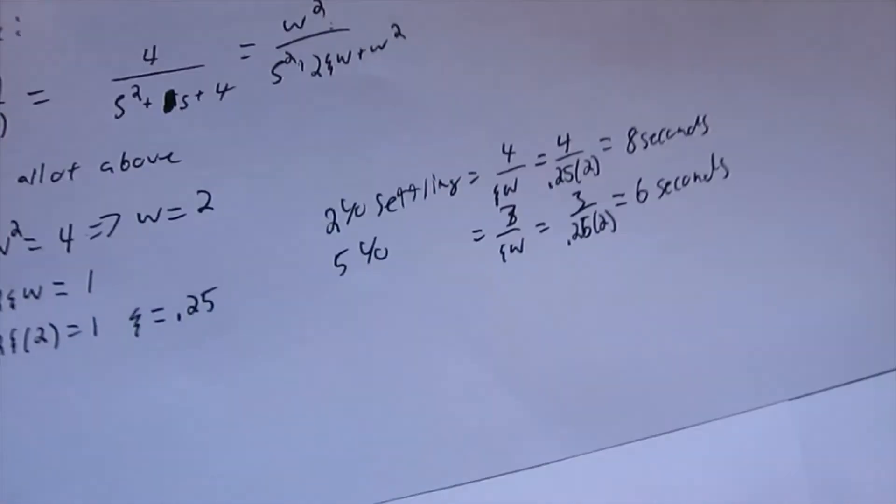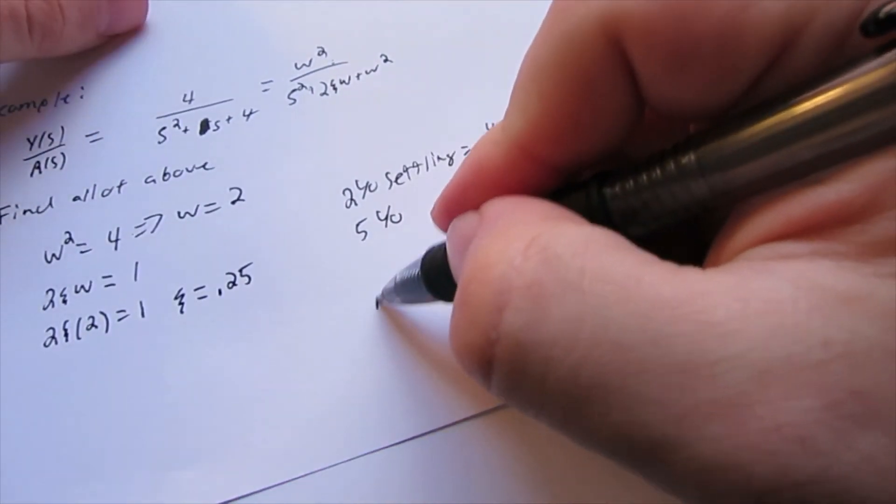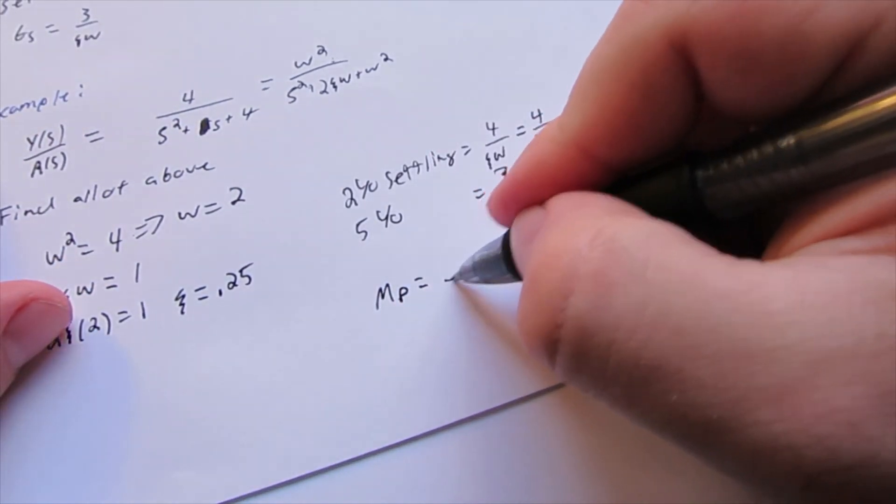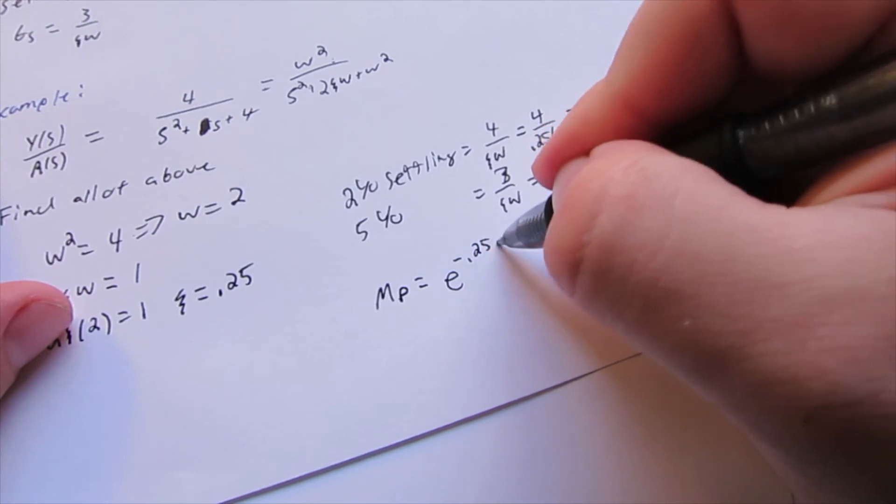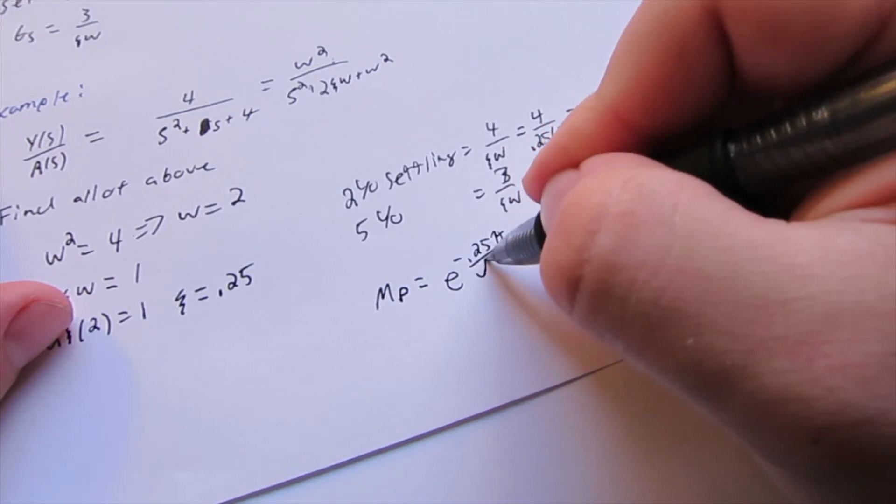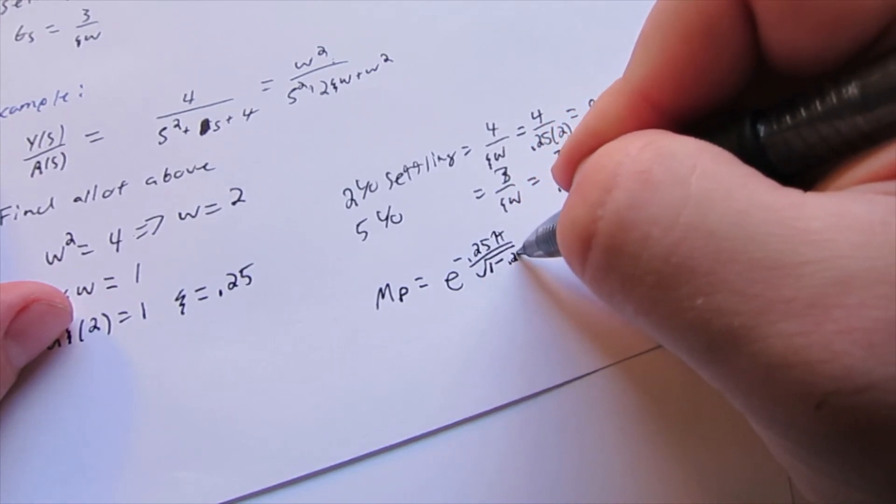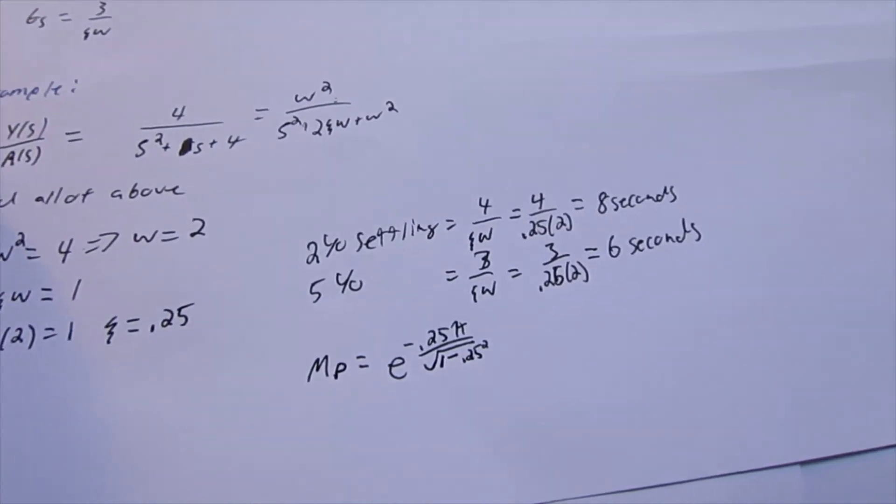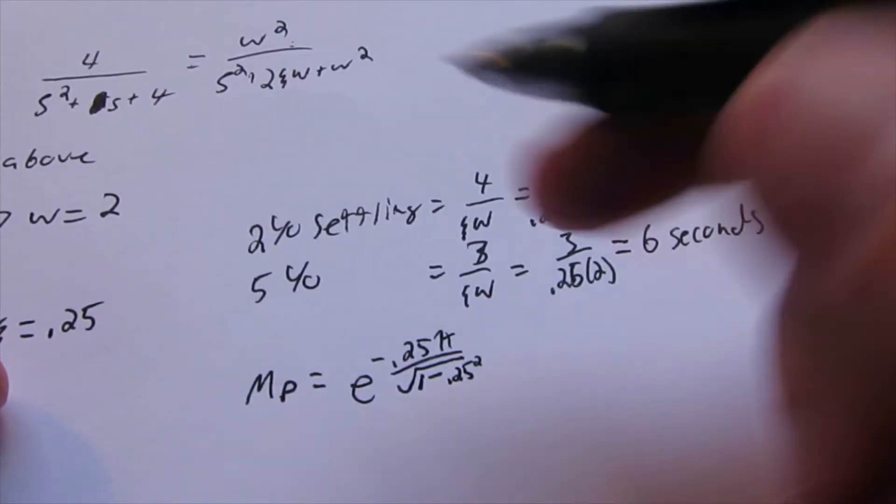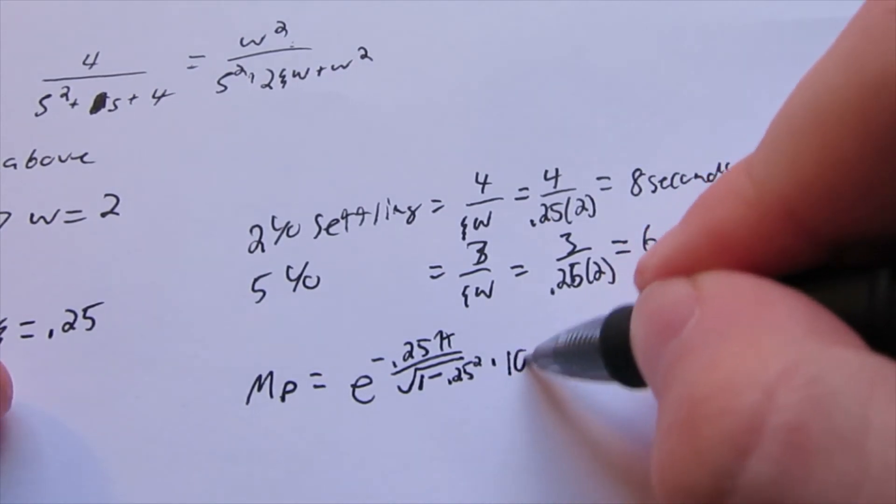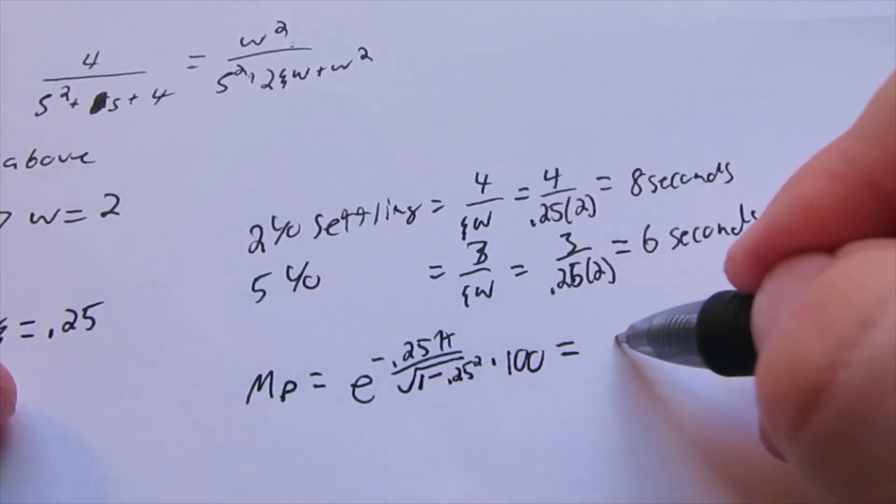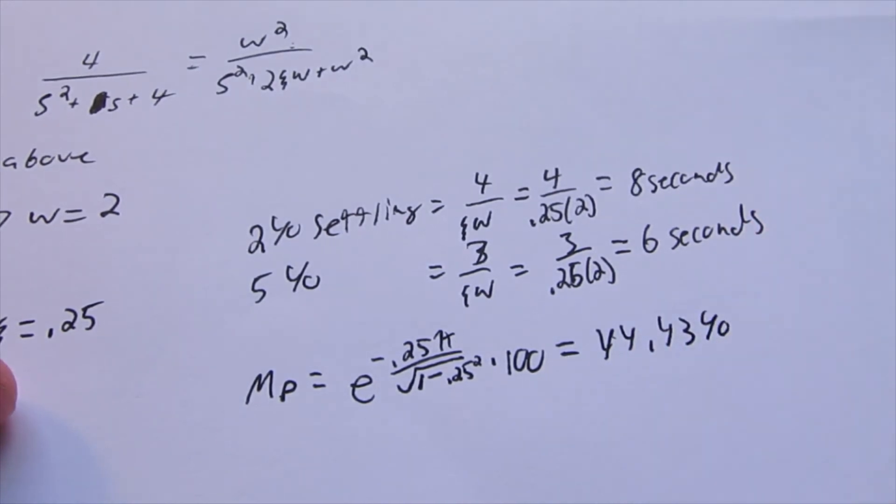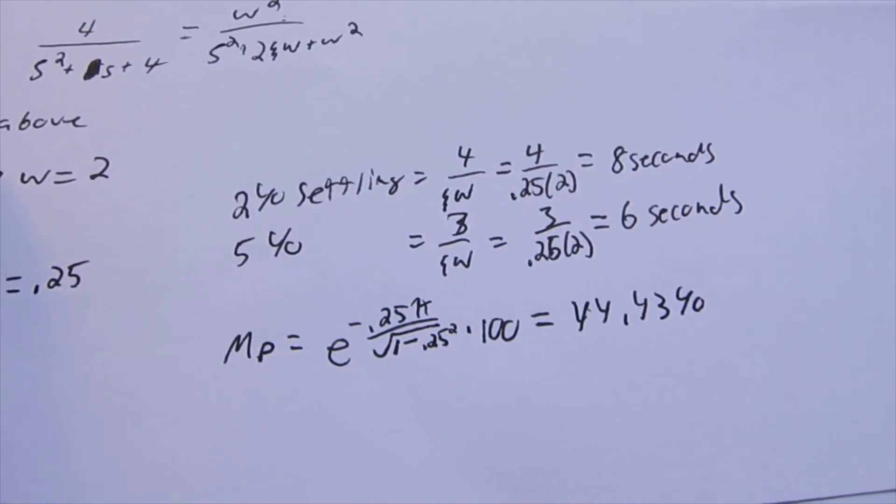Okay. Now we have those. Now we can find our percent overshoot. A little bit more complicated equation. But you can see our percent overshoot only is a function of our damping ratio. And that equals 44.43%.